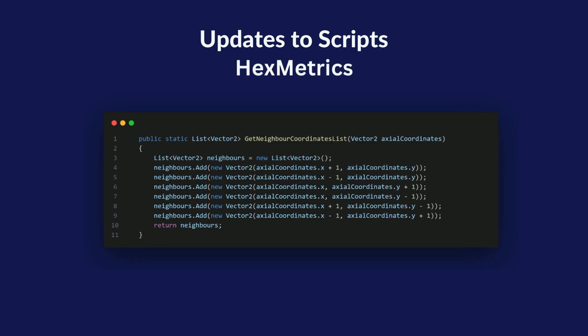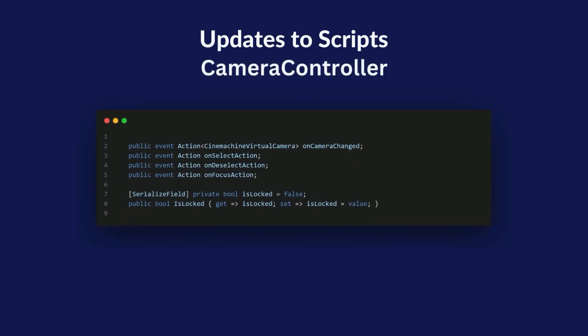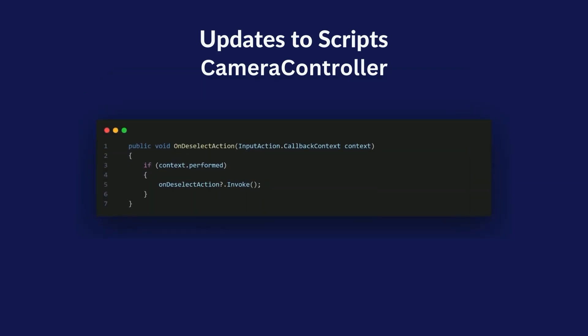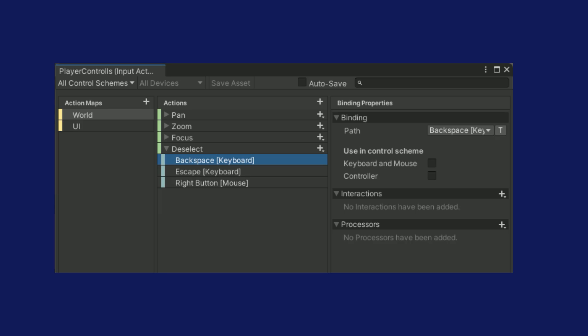Finally, let's have a look at the changes in the camera controller. The script no longer changes the mode itself — instead, events are triggered to which other scripts can respond. The changeCamera method has therefore been made public. I've also added a locking functionality so that the player can't move the camera around when the tile is selected or focused — for this I simply had to check the isLocked flag in the onPanChange method and exit if it's true. There will now also be a deselect action, which simply calls the onDeselect action event when the action is performed. This also means we will need to add it into our input map — check my previous video which covers the creation of player input, defining actions and bindings.